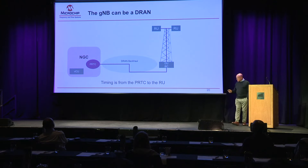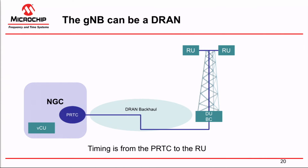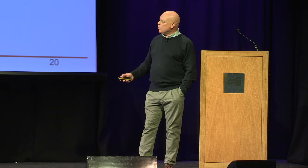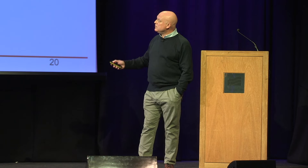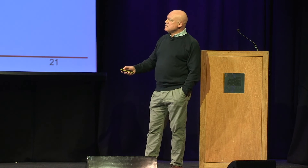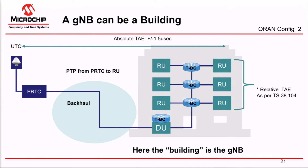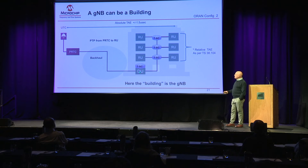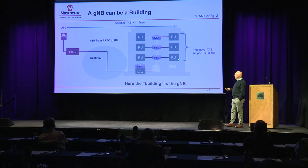What is the gNodeB? The gNodeB can be the DRAN — the classic thing you see around the world — with the next generation core, a PRTC, the virtual CU sitting in the cloud, DRAN backhaul, and timing from the PRTC to the RU up the tower. Or it can be a building, with the PRTC, the backhaul network engineered using 8275.1 or 8275.2, EEC, the DU sitting at the base of the building, time boundary clocks on the switches, spread through a high-rise building with RUs on every floor.